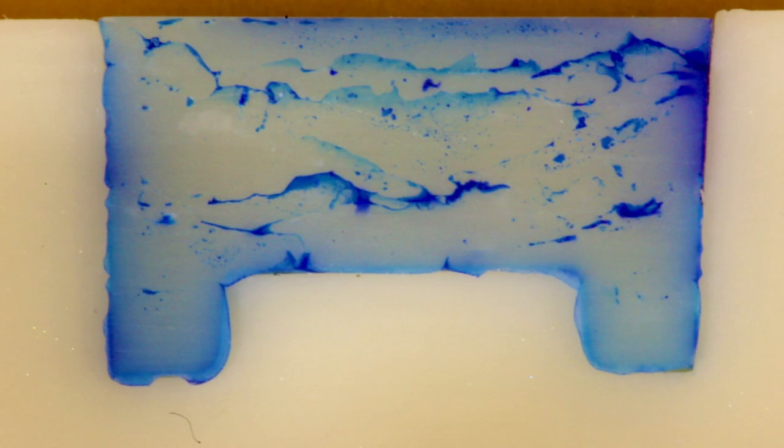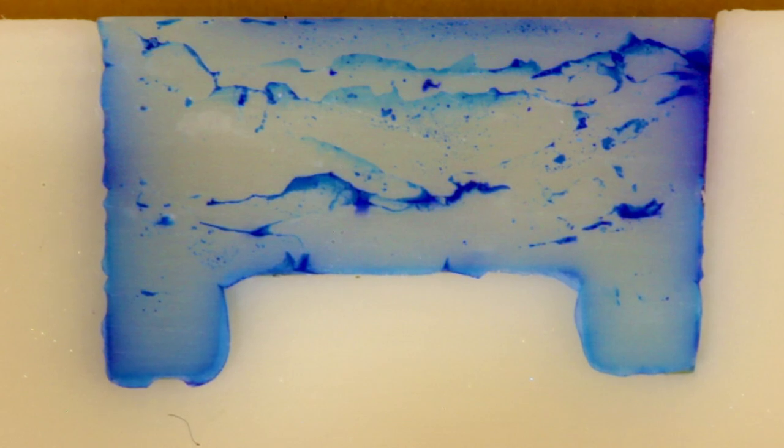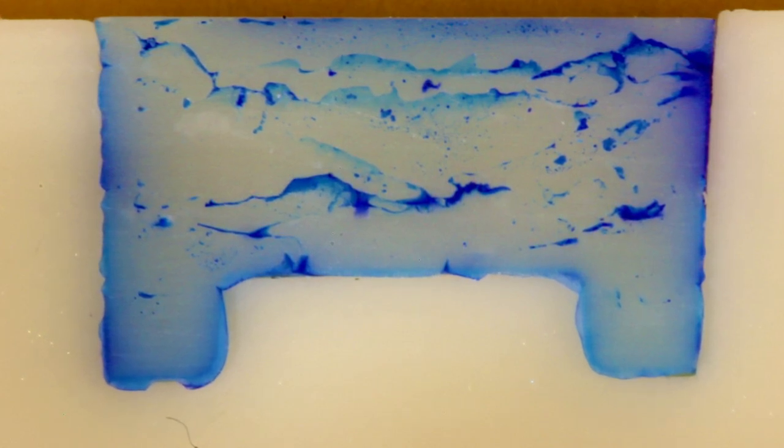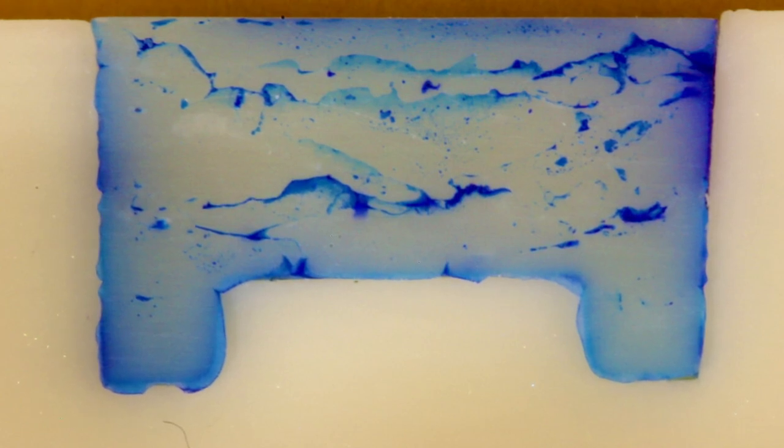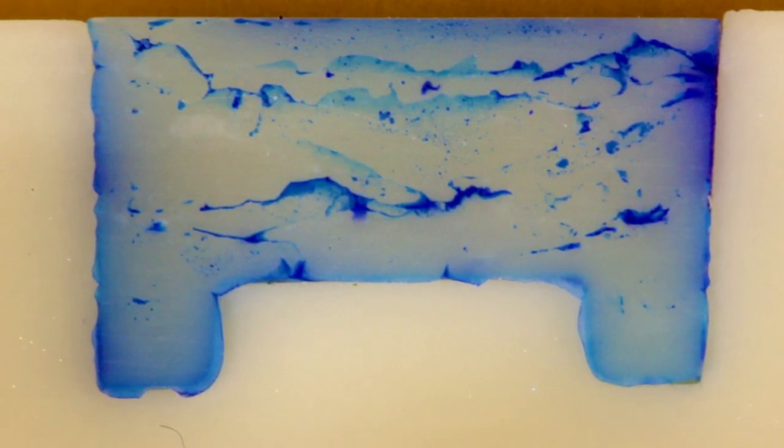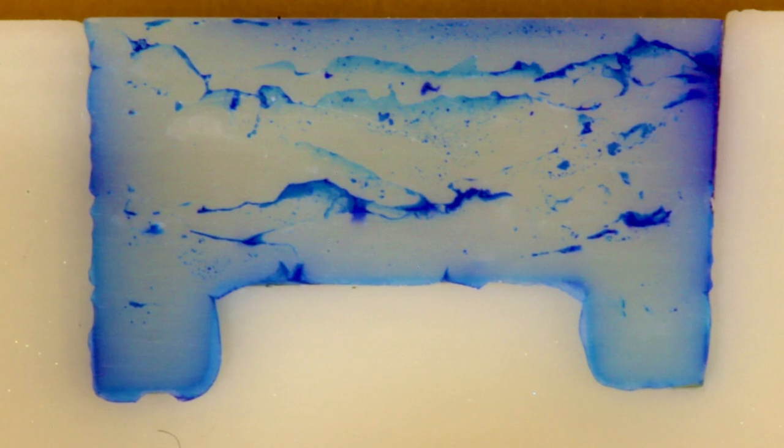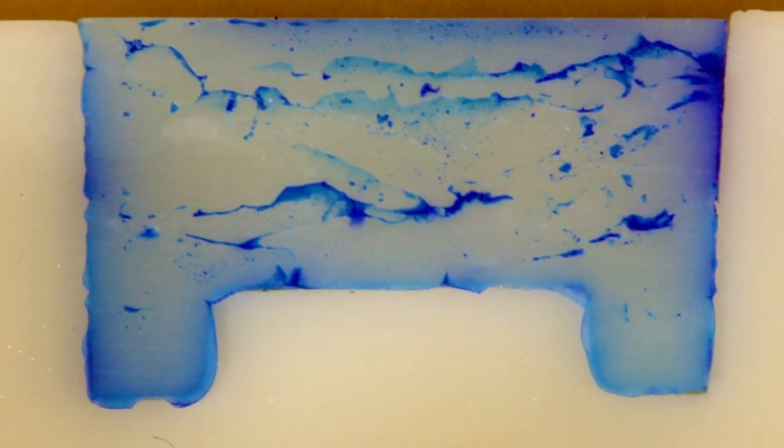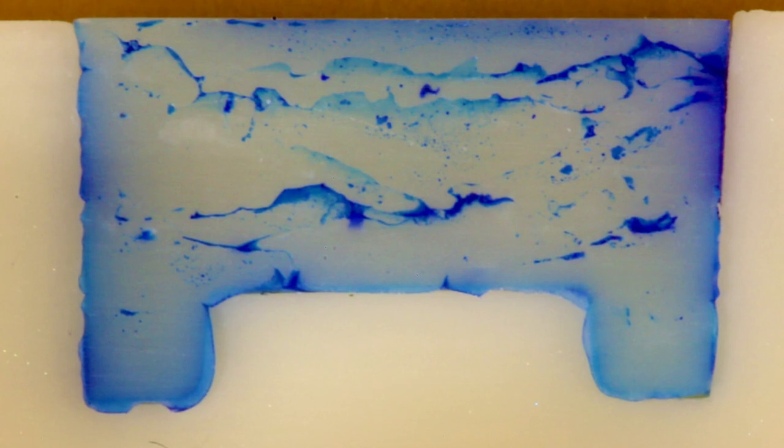When I open the mold and have a look at what I just produced, I can see the knit lines between each layer of composite. To make these lines more easily visible, I've placed blue stain on the surface of the composite and now you can clearly see the join between each increment of composite.